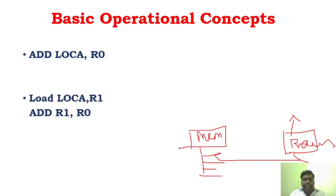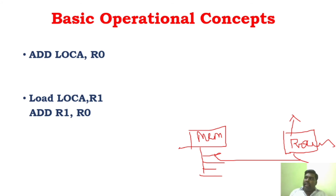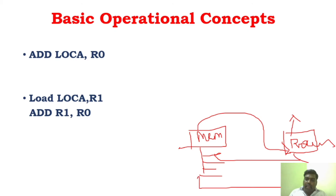The instruction will be originally in the memory, and only from the memory it has to get the information. In order to execute the instruction, first the instruction is fetched to the processor, step by step. After fetching, while executing this particular instruction, if it needs any particular data, that data is also collected from the memory. After doing all the processing, if the result has to be stored in memory, it will be sent to the memory from the processor. This is the basic operation.